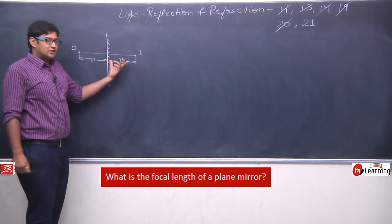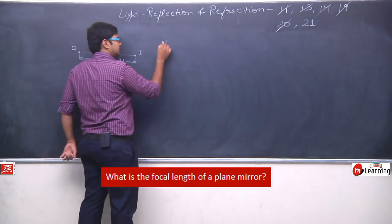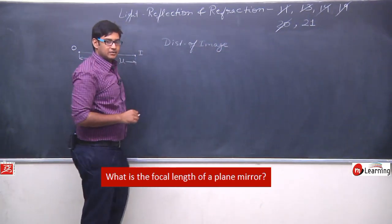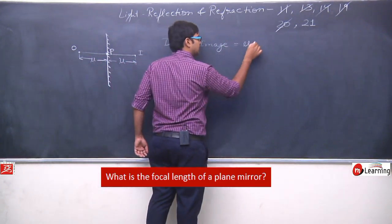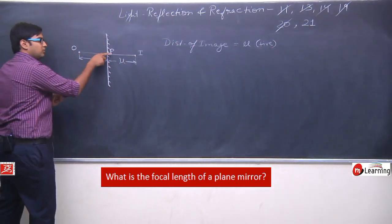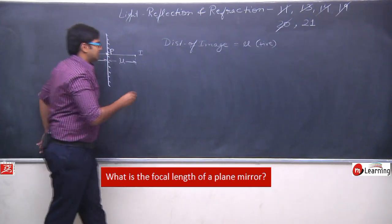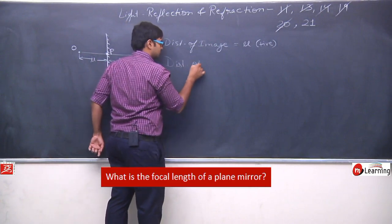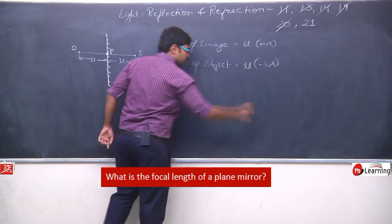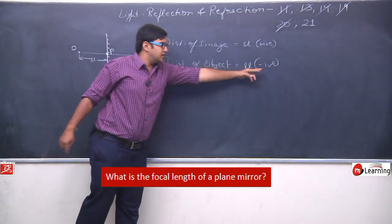Let us say this is the pole P. The distance of the image is u, which is a positive value because going from the pole in the right direction we reach the image. The distance of the object is also u, but it is a negative value because to reach the object from the pole we go to the left side — hence we assume it is a negative value.